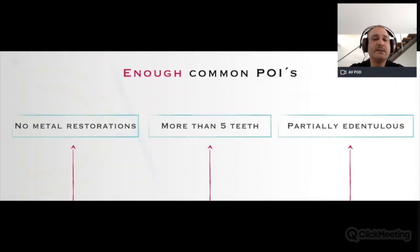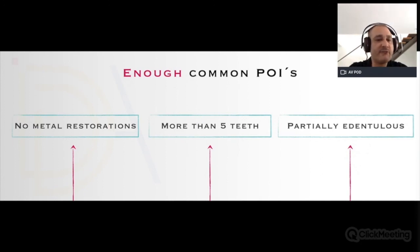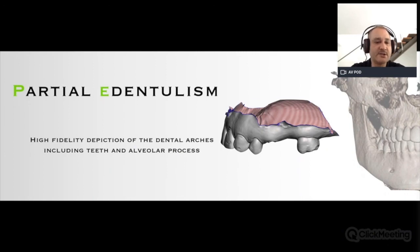The single scan technique is used when we have enough common points of interest — more than 5 teeth — as sufficient reference to stitch the intraoral scan to our CBCT. This applies to partially edentulous patients when there are not many metal restorations that may cause artifacts. When we have a partially edentulous patient with more than five teeth and no metal restorations, this gives us a nicely depictable dental arch including the area of interest — the teeth and surrounding alveolar process — making integration of the intraoral scan easier.